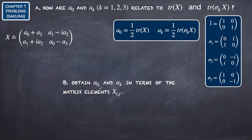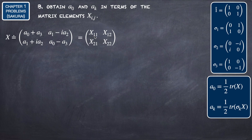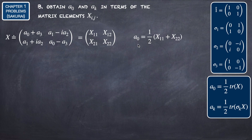Now for part B: let's obtain A0 and A_K in terms of the matrix elements X_ij. The matrix X has elements X11, X12, X21, X22, where the first index is the row and the second is the column. Using the relation A0 equals 1/2 times the trace of X, we get A0 equals (X11 plus X22) divided by 2.